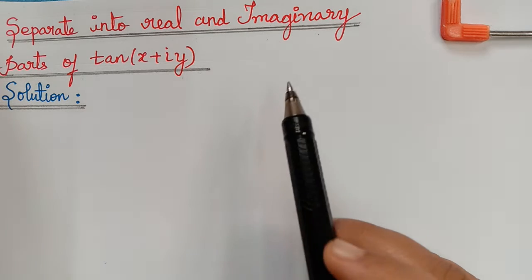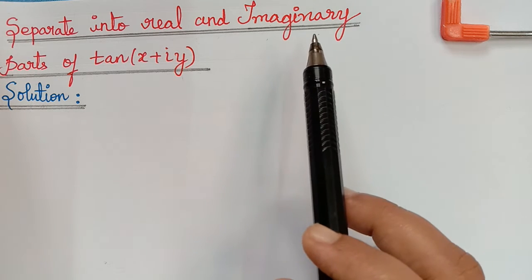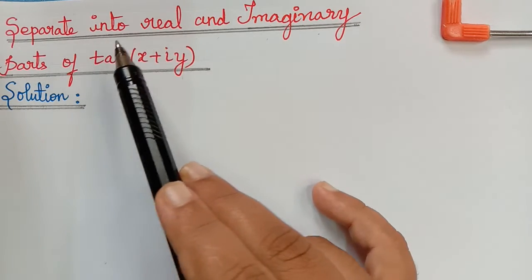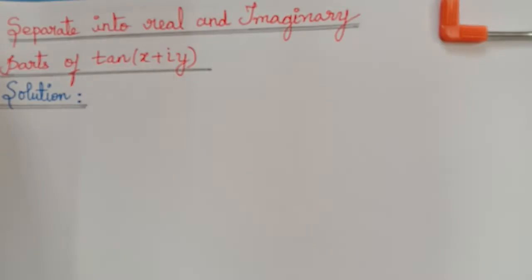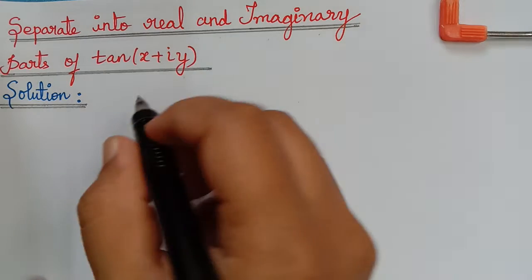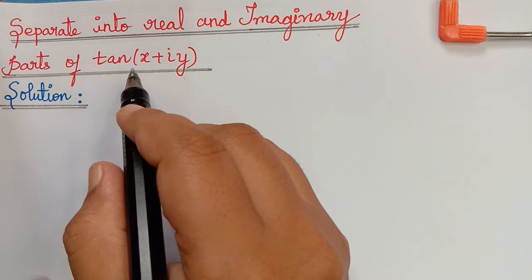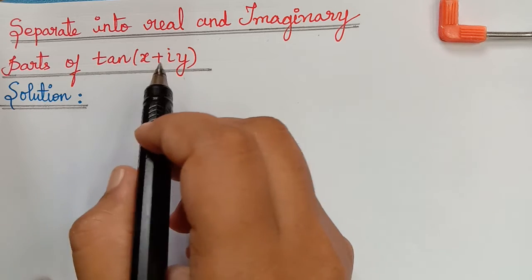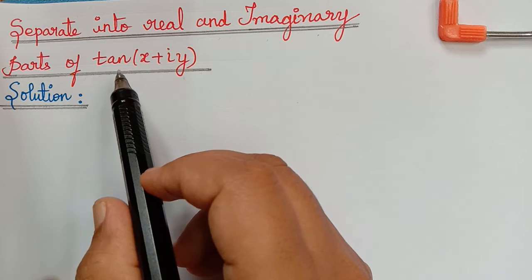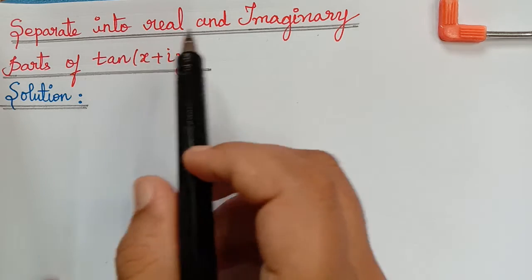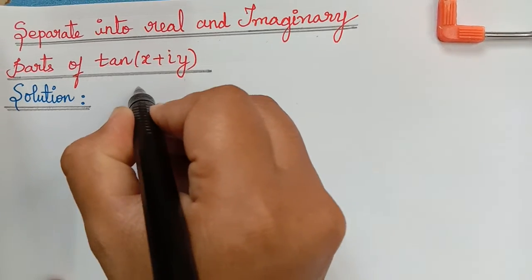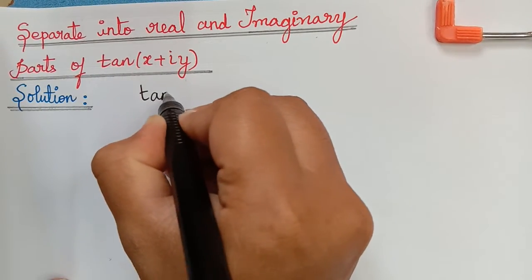Students, this is a continuation of the problems under hyperbolic functions. Here they are asking us to separate into real and imaginary parts of tan(x + iy). We have already seen the real and imaginary parts of sin(x + iy) and cos(x + iy). Now let us see how to separate the real and imaginary parts of tan(x + iy).